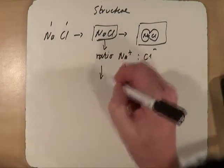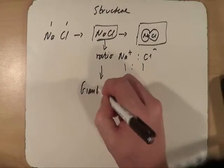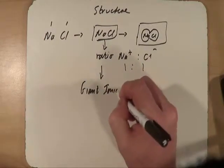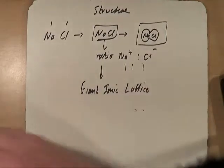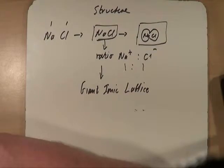So the question is then, well how do they exist? Well, they exist in a structure called a giant ionic lattice. Now, the first thing we need to work out is what does a giant ionic lattice actually look like?